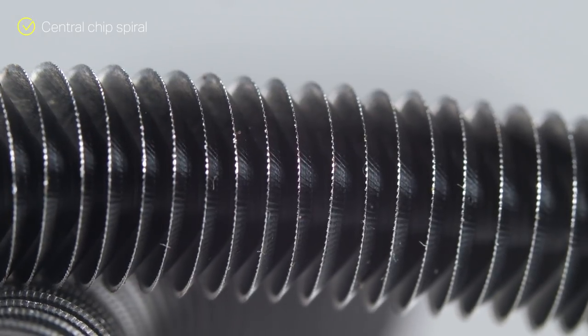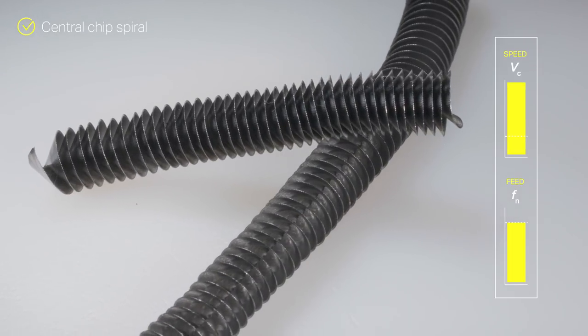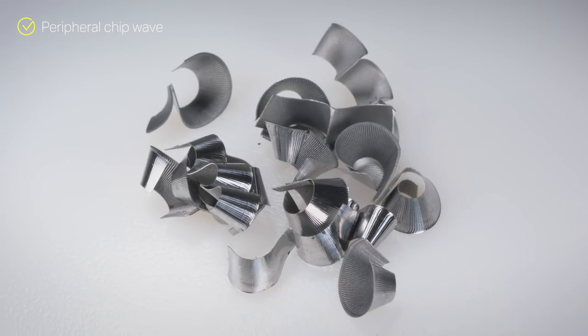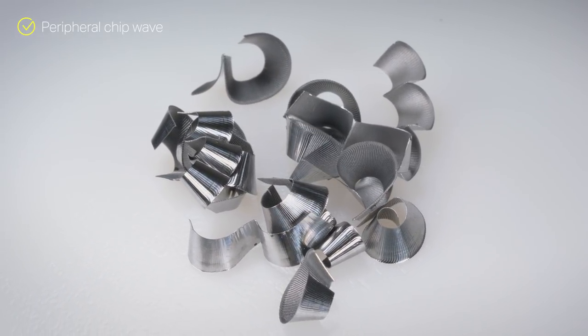To produce the flexible spirals that can evacuate easily, increase the cutting speed or reduce the feed rate. The peripheral insert chips will look quite different compared to short chipping materials.